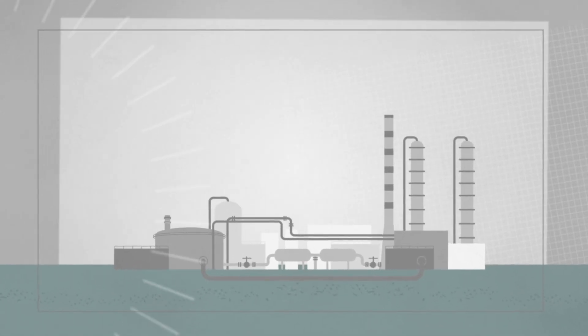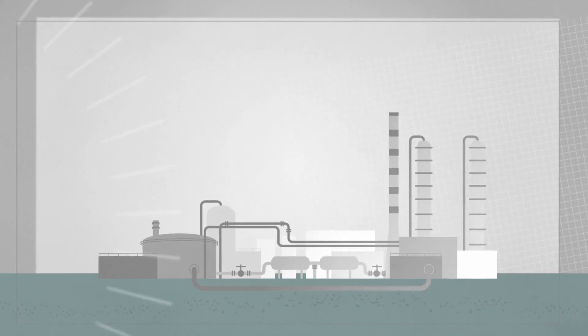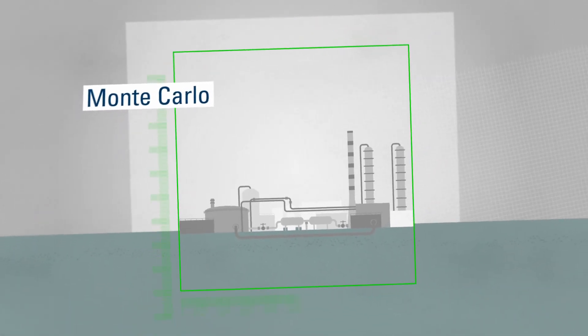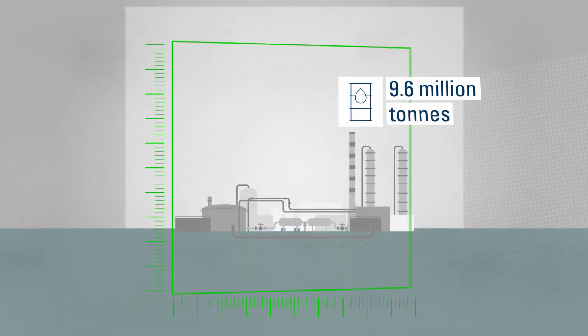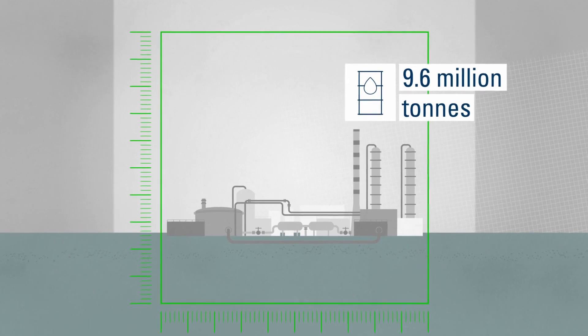The refinery in Spechat is one of Europe's largest and most cutting-edge refineries. On a space the size of Monte Carlo, up to 9.6 million tons of crude are processed every year.